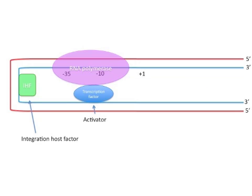Other transcription factors require a second protein to bend the DNA. These proteins are called integration host factors, which bind between the activator and the promoter region, and bring the activator to the RNA polymerase.